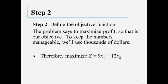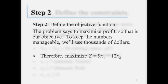Step two is to define the objective function. The last sentence before part A says the company wants to determine the number of batches to produce in order to maximize profit. We're working in thousands of dollars. The profit for a batch of Nectar is $9,000 and for a batch of Red is $12,000. So our total profit is 9 times the number of batches of Nectar plus 12 times the number of batches of Red — that profit function is what we want to maximize.